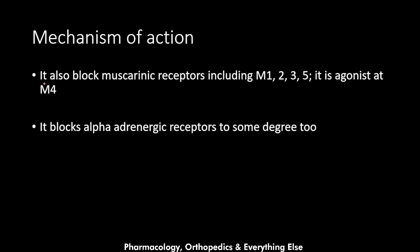Clozapine also blocks muscarinic receptors M1, M2, M3, and M5, but acts as an agonist at the M4 muscarinic receptor. Antagonizing these muscarinic receptors leads to anticholinergic symptoms like elevated temperature, urinary retention, constipation, and sedation. However, because it acts as an agonist at M4, which is highly expressed in the salivary glands, clozapine causes hypersalivation as an adverse effect.